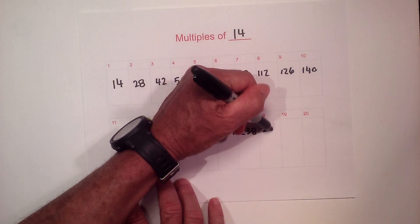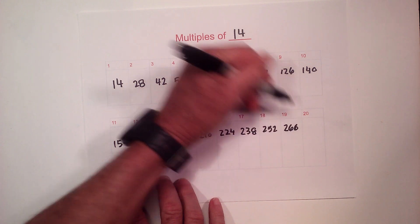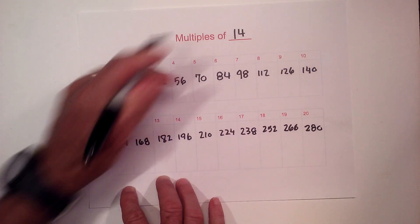Then we have 252, then 266, and then 14 times 20 is 280.